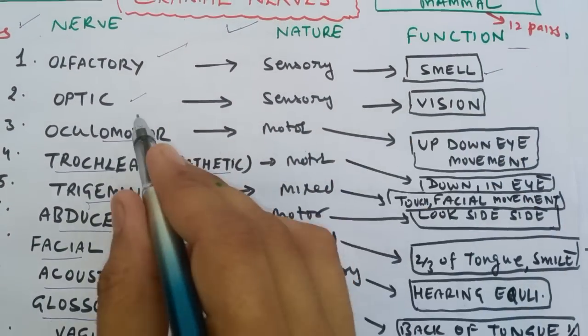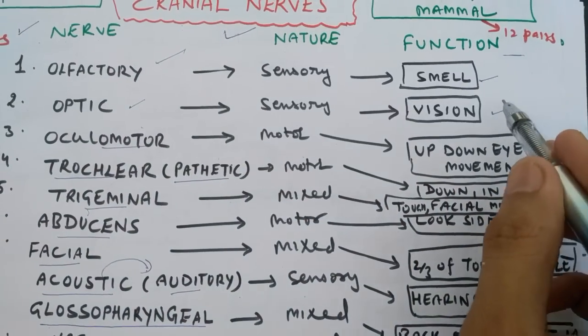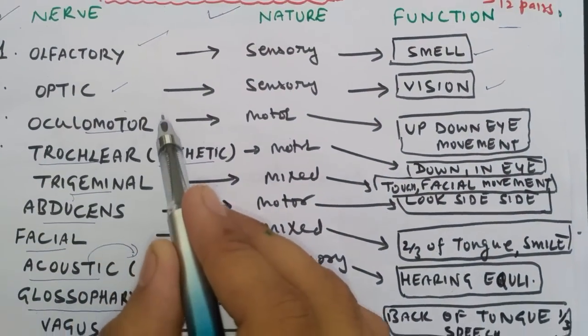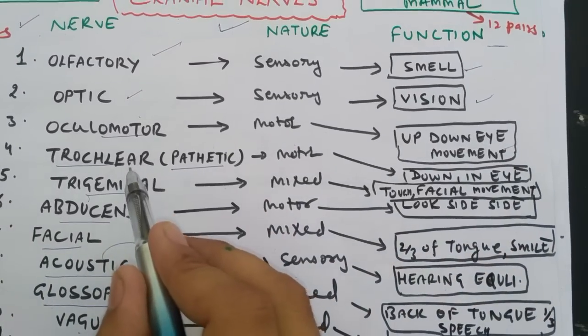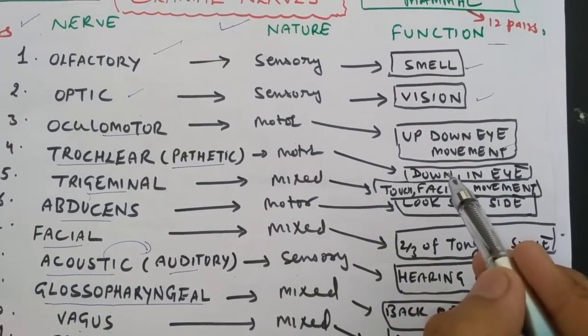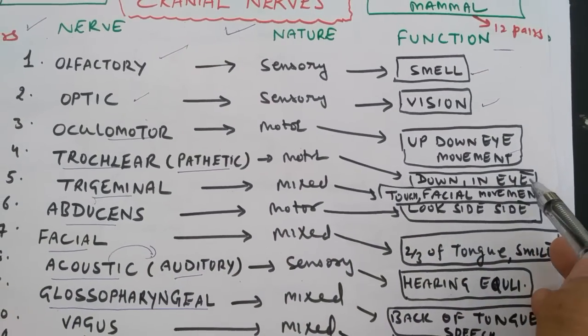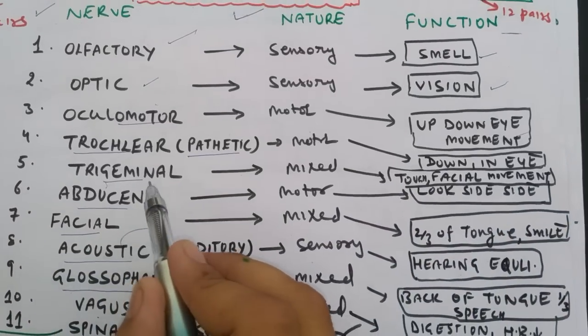Next, their functions. Olfactory is related to smell. Optic is related to vision, controlling the functioning of our eyes. Oculomotor controls up and down movement of the eye.